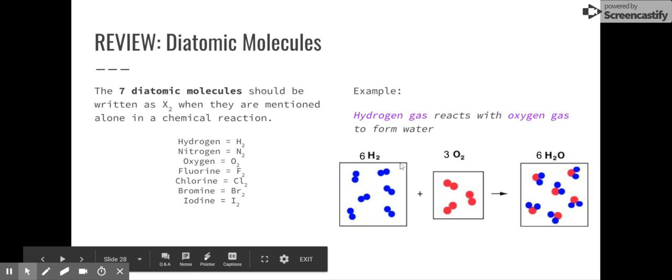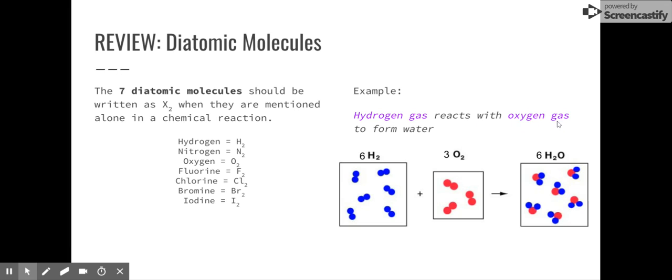So for example, we saw this reaction before. Hydrogen gas reacts with oxygen gas to form water. Well, it just says hydrogen gas. That's pure elemental hydrogen. That's diatomic. So I'm going to write H2. Oxygen gas is pure elemental form of oxygen. So I'm going to write O2. But water is not the pure forms of hydrogen or oxygen. So this is not diatomic. Even though this 2 is here, that doesn't mean that this hydrogen is diatomic. That's just the ratio they need to go as a covalent compound.